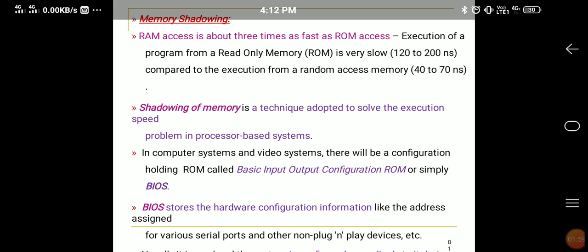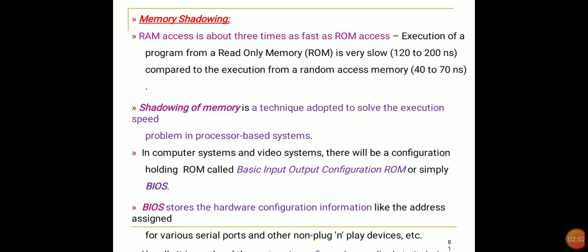Next, memory shadowing. RAM access is about three times as fast as ROM access. RAM is read-write memory used for temporary storage during program execution, so its speed must be greater. The access time of ROM is very slow — about 120 to 200 nanoseconds — compared to RAM, which takes 40 to 70 nanoseconds.